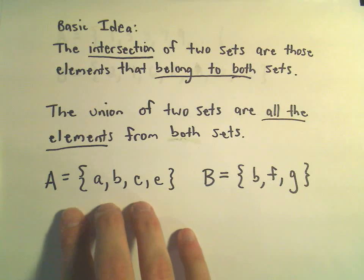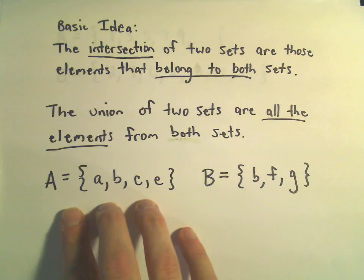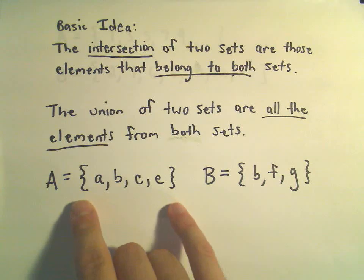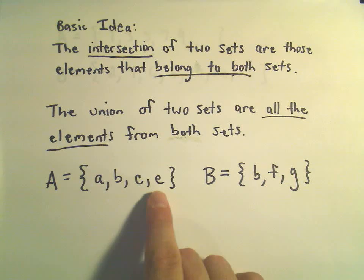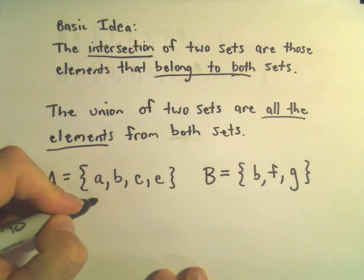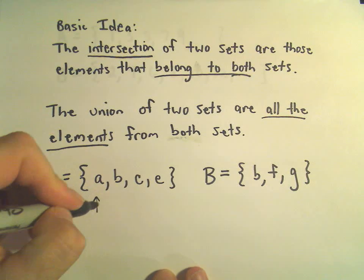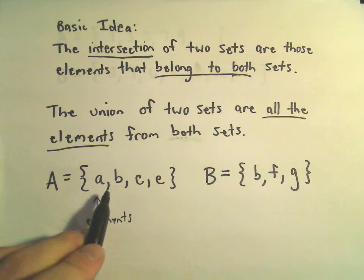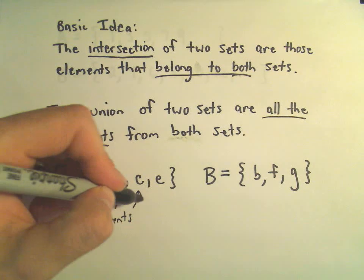Suppose one little example here, suppose we have the set A, and our little set notation, we use our little curly brackets, and the elements inside, that's what we label each one. So, in this case, we have four elements. We've got the element A, B, C, and E.